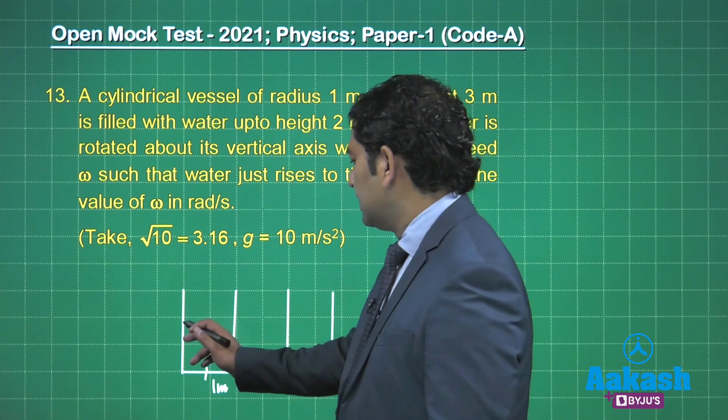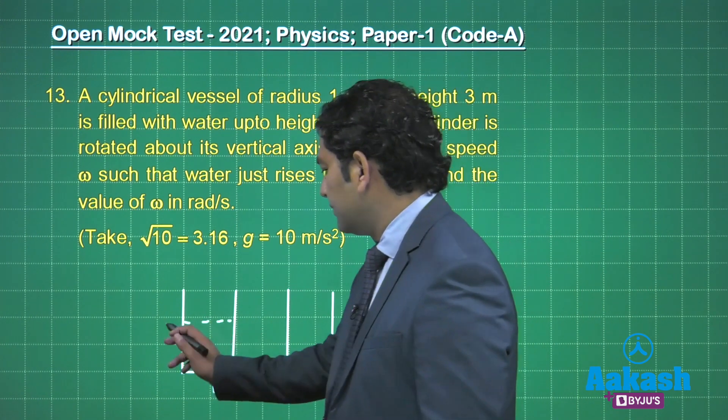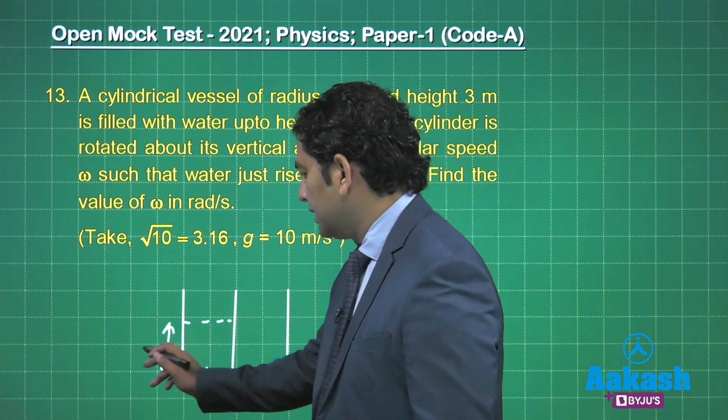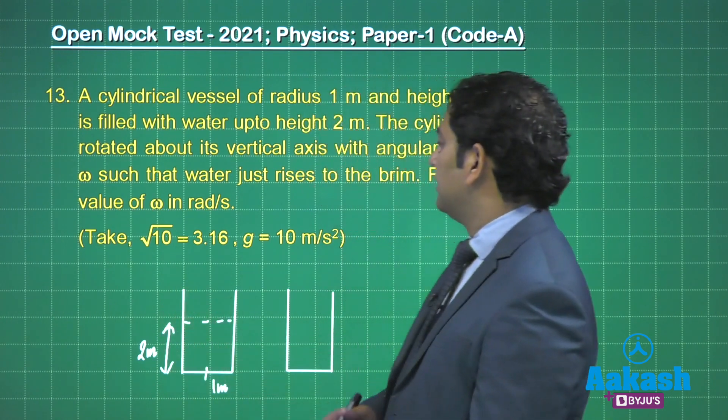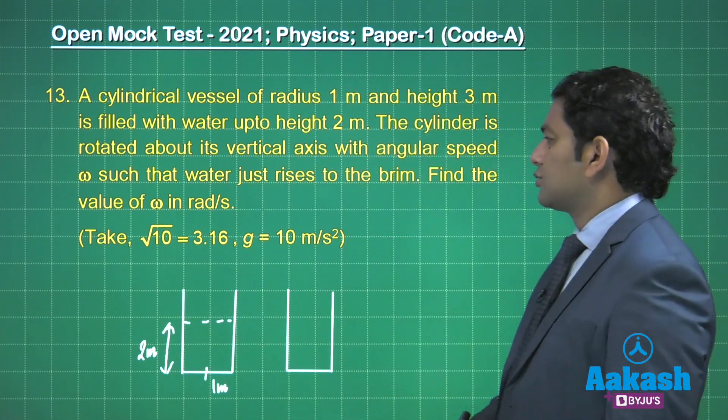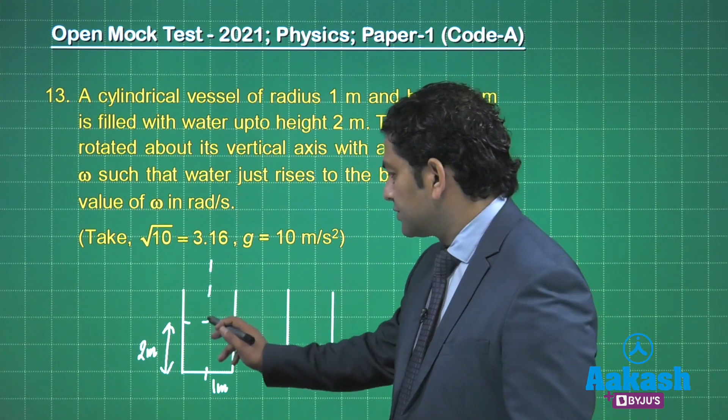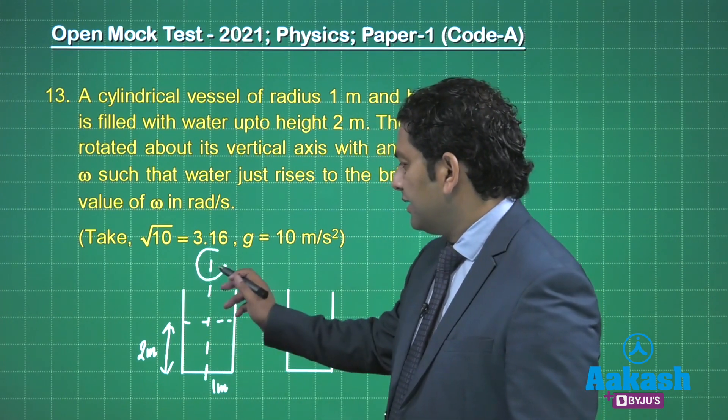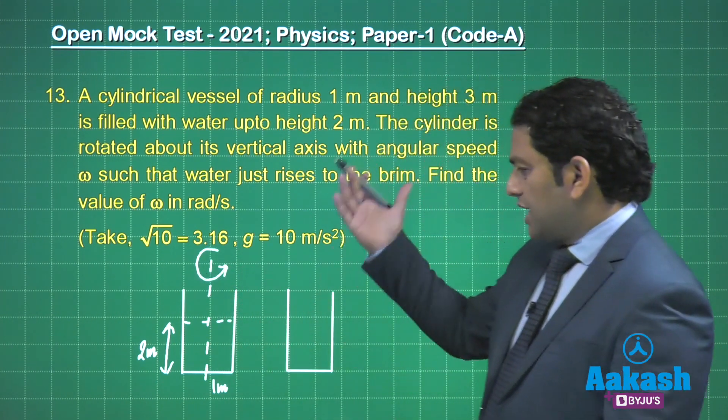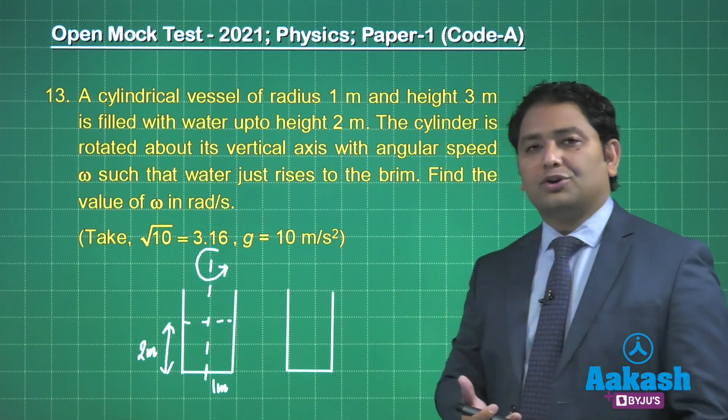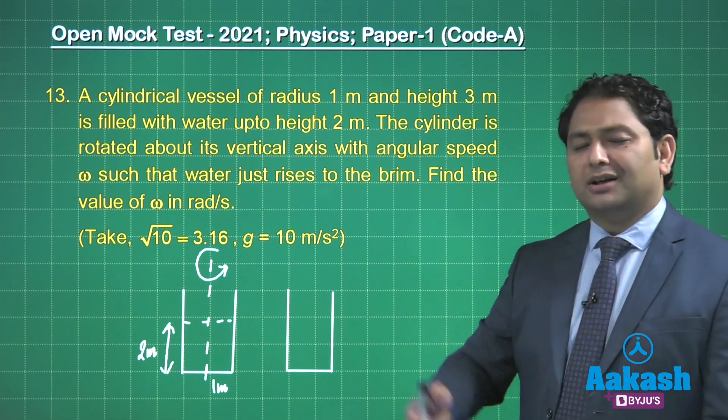It is filled with water up to height 2 meter, and this cylinder is rotated about its vertical axis. So it's a clear case where the shape of the free surface is going to be a paraboloid, because in three dimensions that parabolic line would be called a paraboloid.